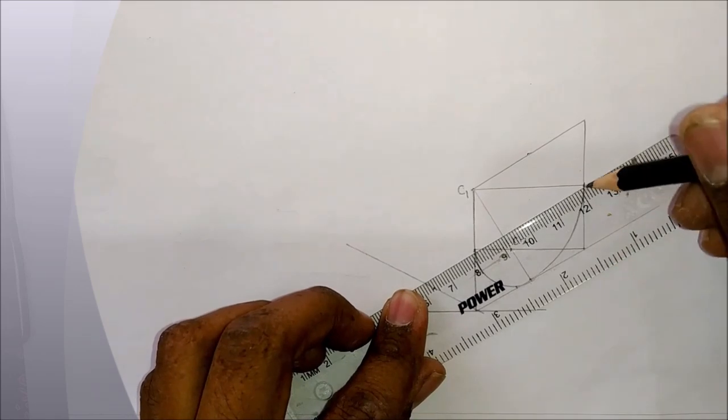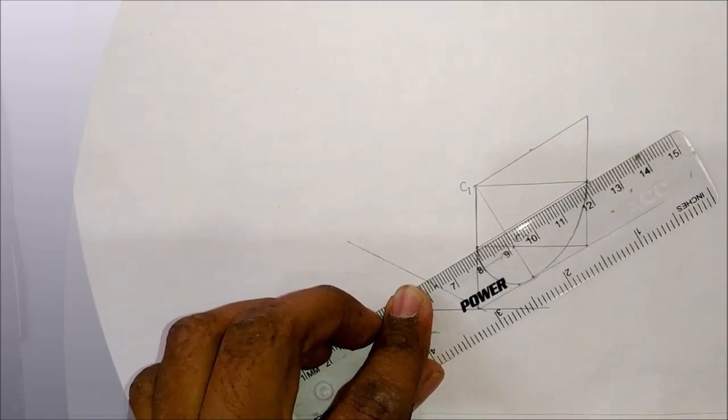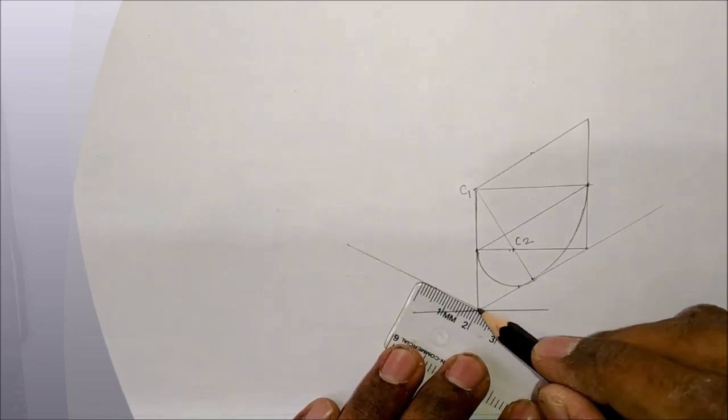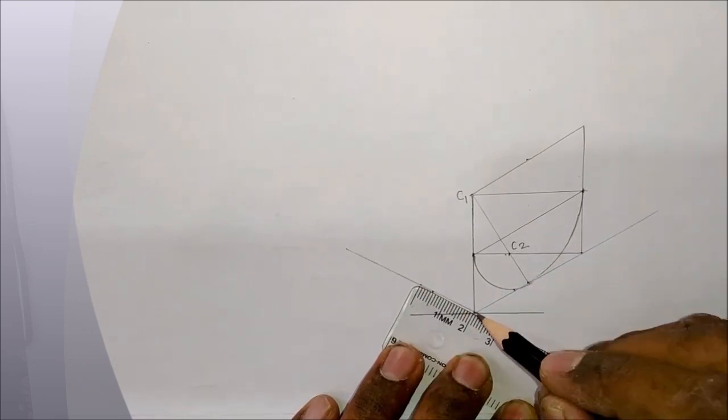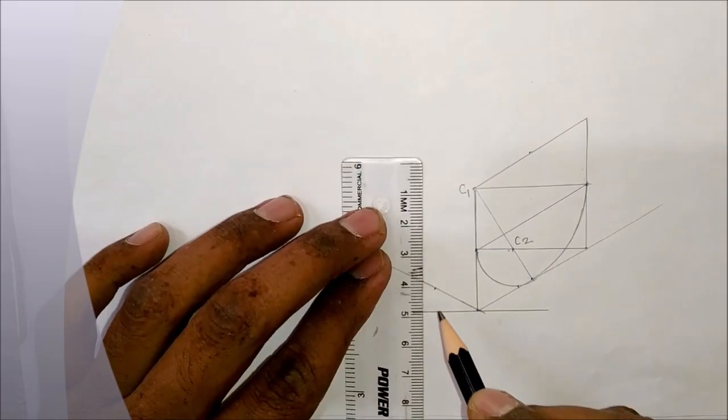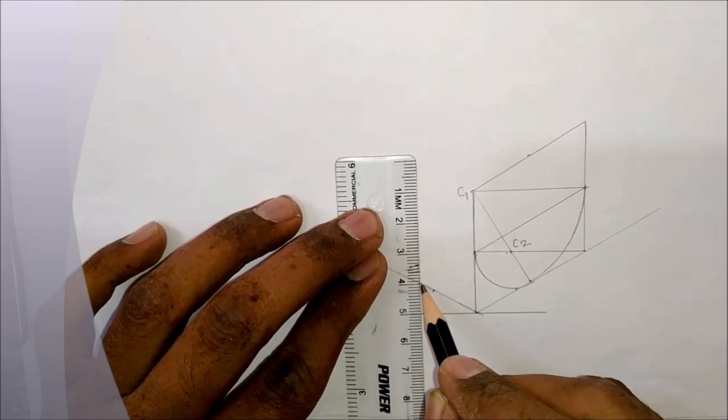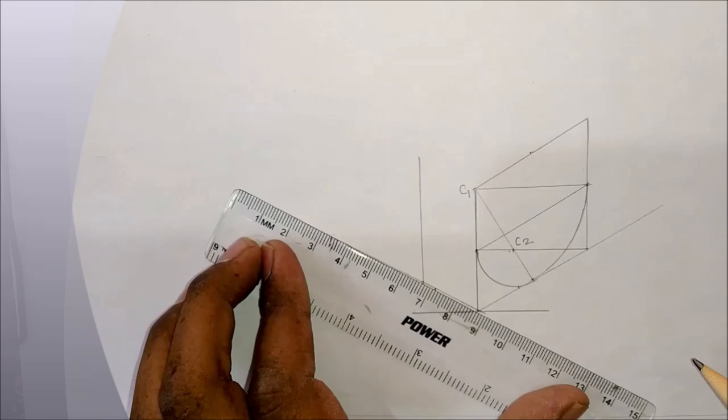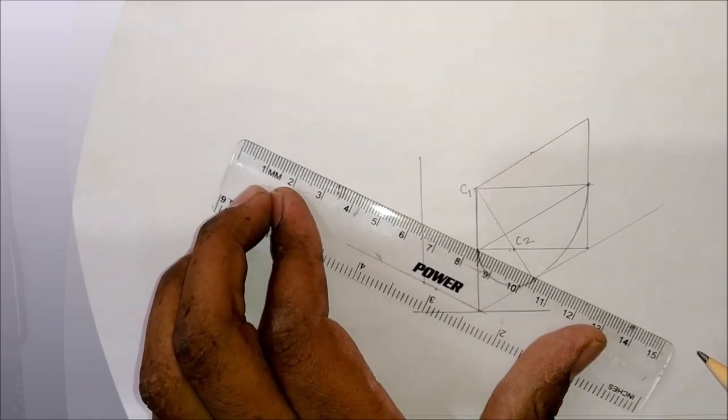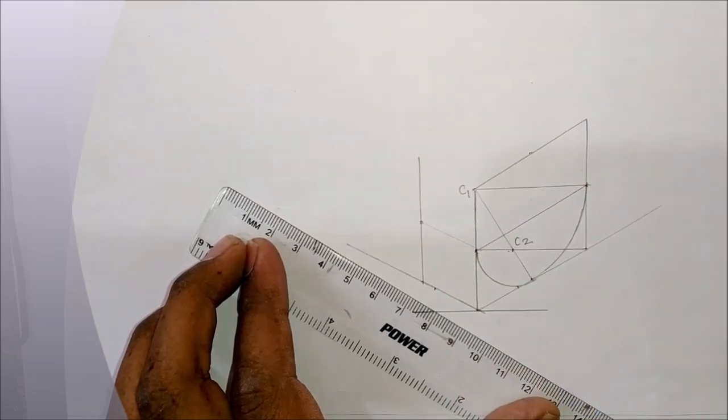Now construct the diameter. Now similar construction we have to make for 20mm besides this square. So again we will construct one more square which is 20mm from each corner point. We will use the shifting method. We will shift the centers only.